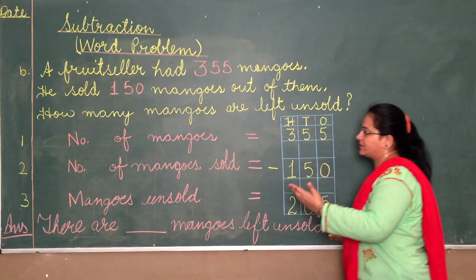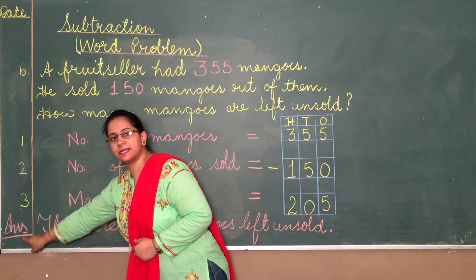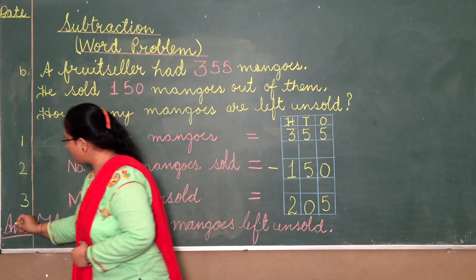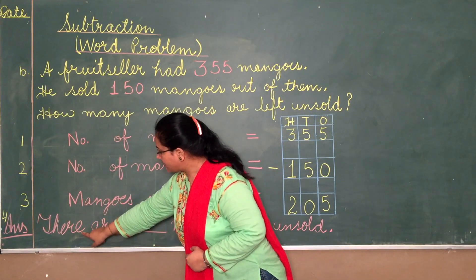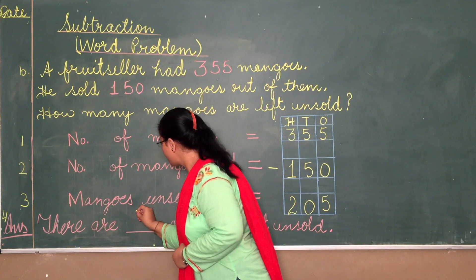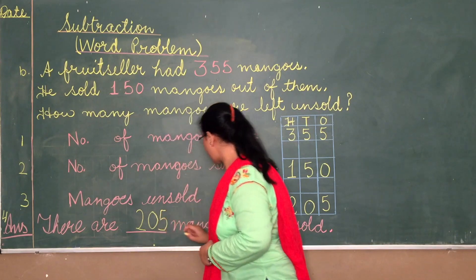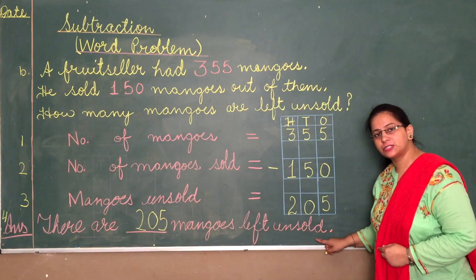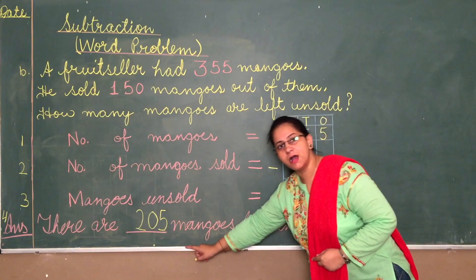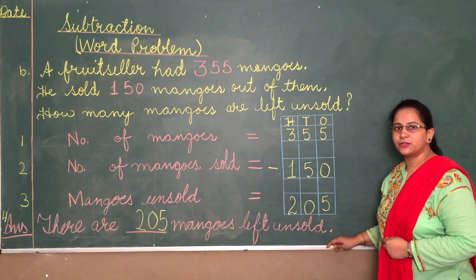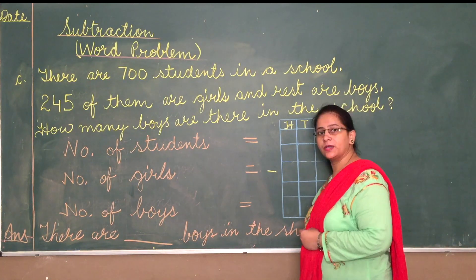Now we will write the answer. Before the margin write 'Ans' — that is the answer. The fourth statement is: 205 mangoes are left unsold. This is your answer, and after this you draw the margin. I hope you have understood this. Let us continue with one more example.